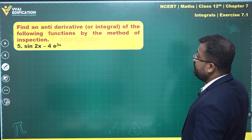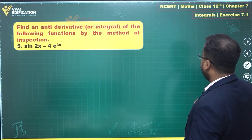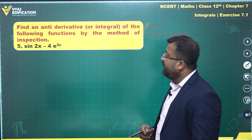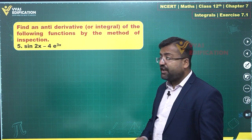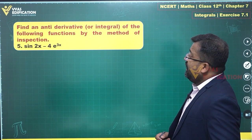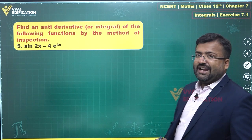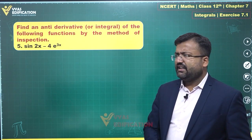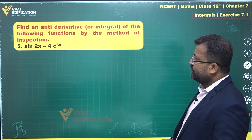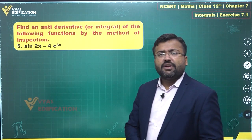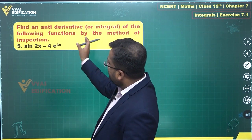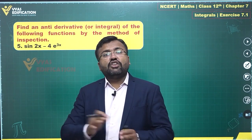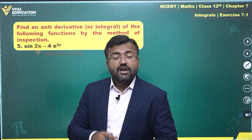The fifth question is sin2x minus 4 e^(3x). By inspection, I can handle sin2x and e^(3x) separately. Why focus on finding the antiderivative of the whole thing at once? We know that constants will be playing around one way or the other, so let's handle them separately.